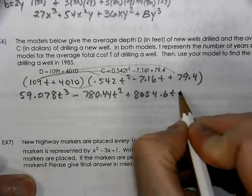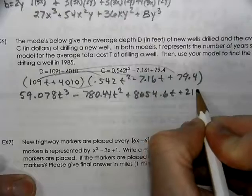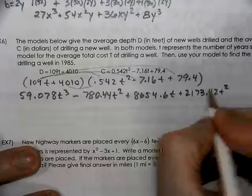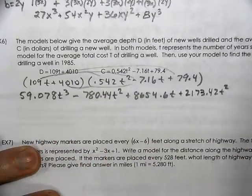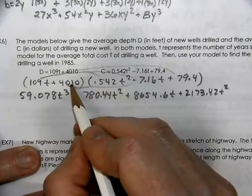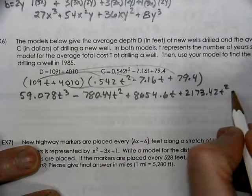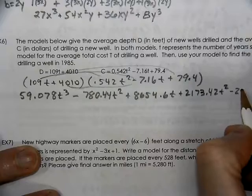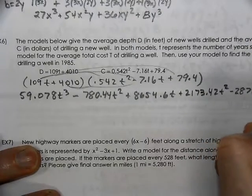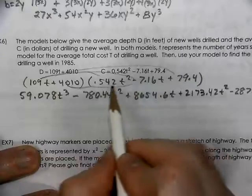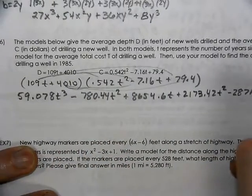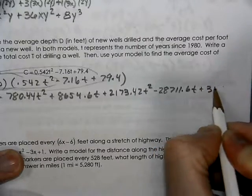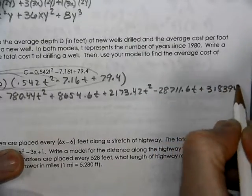4010 times 0.542. You can try it with your calculator. You get 2173.42t squared. Multiply our 4,000 number to our 7.16. We get negative 28711.6t. And then we get our last number times our last number to get a positive 318.394.